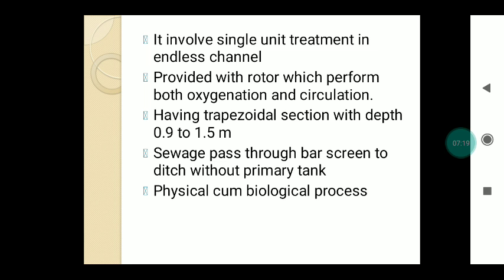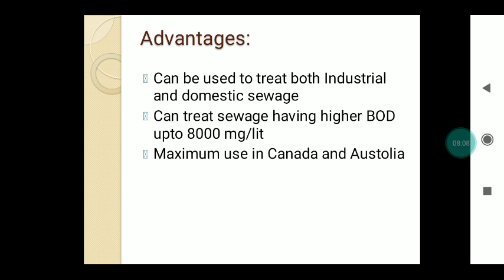The rotor provides oxygen to the sewage and also provides circulation of the sewage. The oxidation ditch has a trapezoidal section with a depth of about 0.9 to 1.5 meters, and sewage passes through bar screening directly into the ditch without any primary settling tank. The sewage is then discharged into the secondary settling tank. It performs both physical and biological processes — sedimentation and biological action. It can treat both industrial and domestic sewage with BOD up to 8000 mg/L, and is widely used in Canada and Australia.